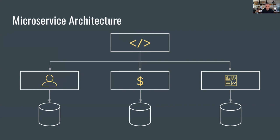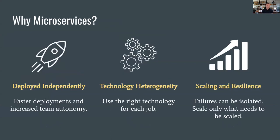What are the advantages of this architecture? You can deploy every microservice independently. In a monolithic app, a one-line change requires redeploying the entire system. With microservices, you can deploy each service separately and leave the rest intact. You can deploy faster and changes reach users sooner. Teams built around microservices have an increased sense of ownership and increased autonomy to make changes and release at their own pace.